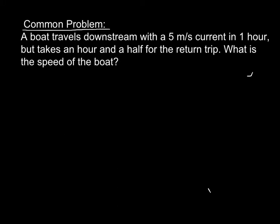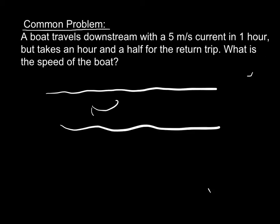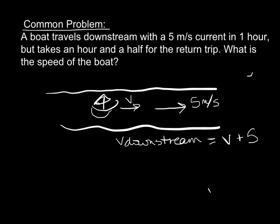So a classic problem, one you probably saw in Algebra 1, is when a boat was traveling downstream. So we've got our river, we've got our boat, and the boat's traveling downstream, and the current has a stream of 5 meters per second. We don't know the velocity of the boat, but we do know that the speed it goes downstream is the sum of those two velocities, V plus 5. And it takes it one hour, so the time to go downstream is one hour.